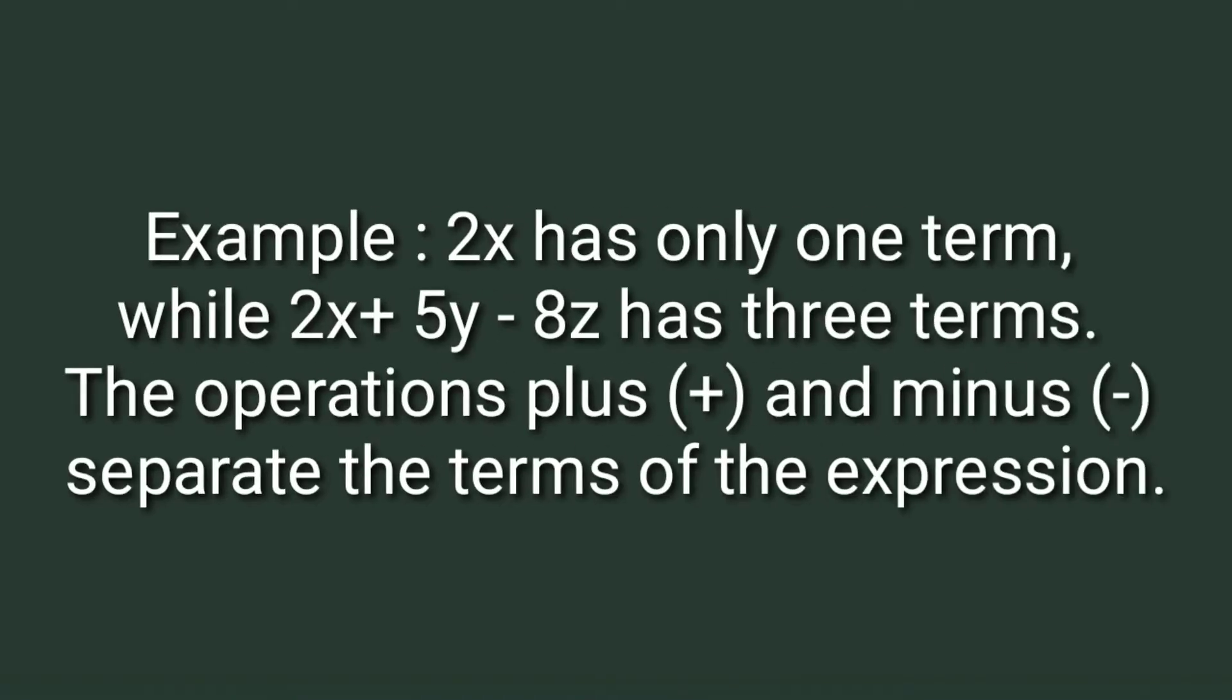2x has only one term, while 2x plus 5y minus 8z has three terms. The operations plus and minus separate the terms of the expression.